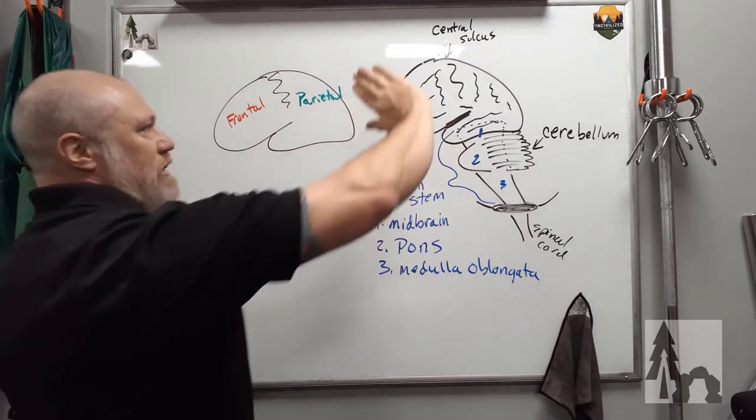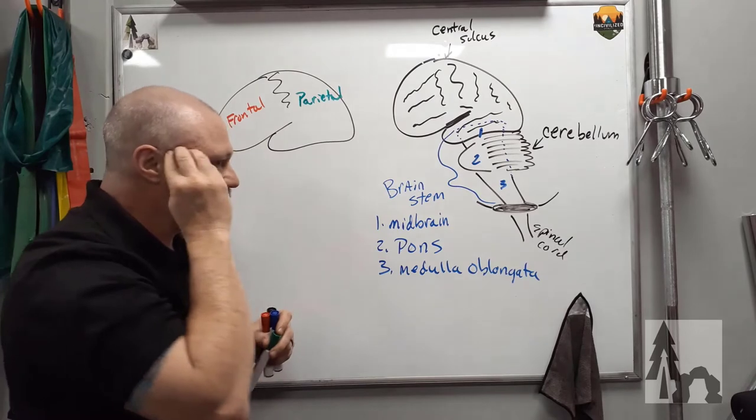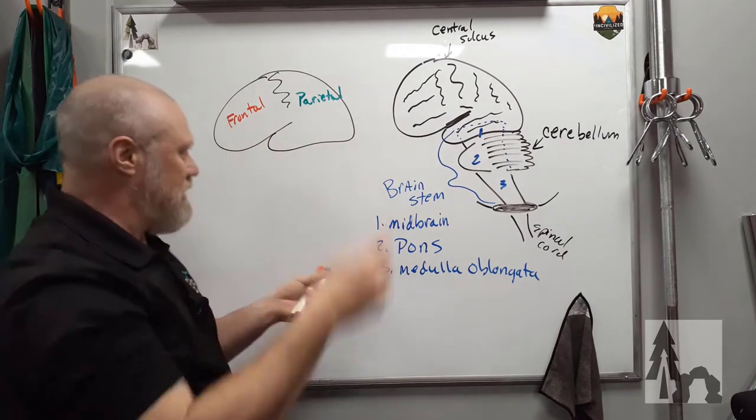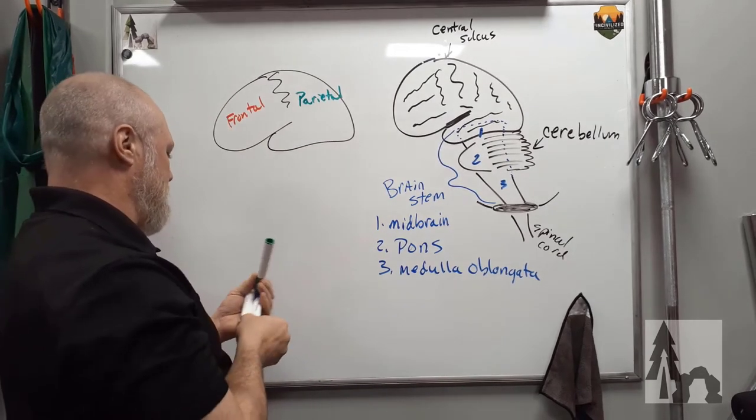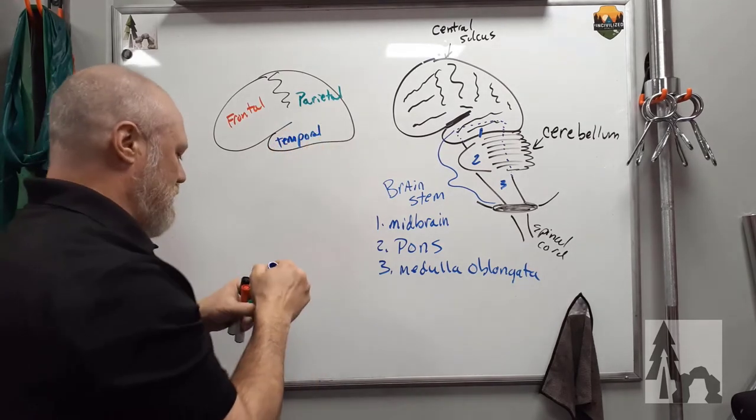The thumb portion of the mitten, like I was talking about that earlier, that would correlate to the temporal bone, is the temporal lobe.